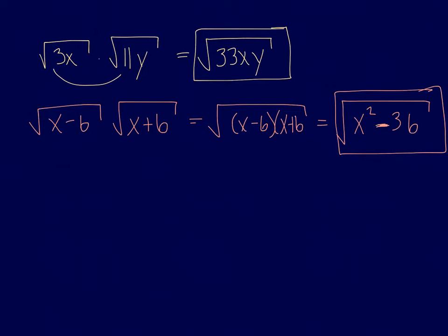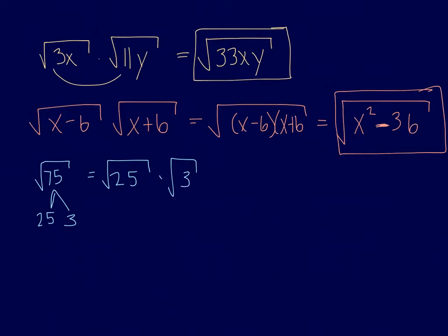Let's find the square root of 75. We want to look for perfect square factors. 75 is 25 times 3. So we get the square root of 25 times the square root of 3. The square root of 25 is 5. The square root of 3 has no perfect factors, so the final answer is 5 times the square root of 3.